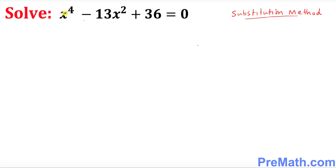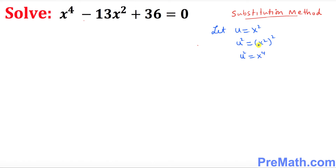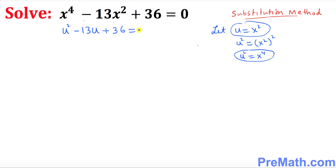As you can see, x to the power 4 is pretty cumbersome, so we want to make it simpler. In order to do that we will be using a substitution method. I'm gonna say let u equal to x squared, then u squared simply becomes x squared to the power 2, so u squared is simply x to the power 4. We got these two substitutions to make in this equation, so x to the power 4 becomes u squared, minus 13 times x squared becomes 13u, plus 36 equals 0.